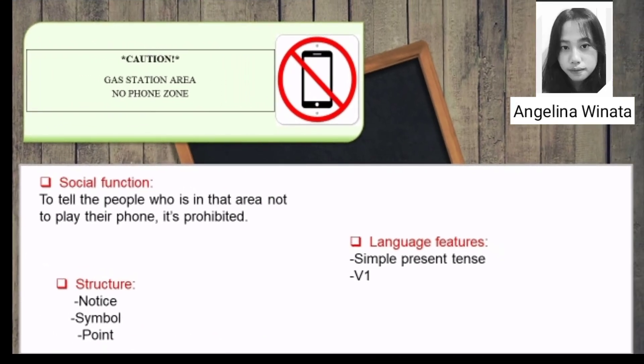The fourth sign in public places is: 'Caution, the station area, no phone zone.' The social function is to tell the people who are in that area not to play their phone — it is prohibited. The language feature uses simple present tense and verb one. The structure of the text is: notice, symbol, and point.